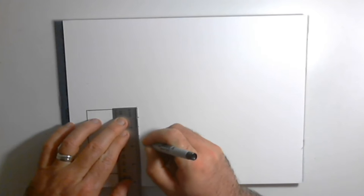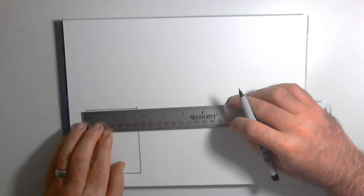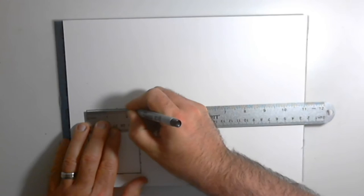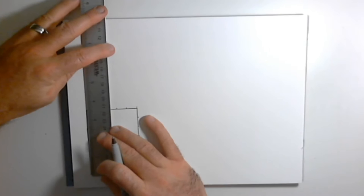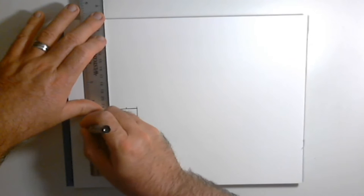One inch, one and a half, two, two and a half, three, and then three and a half is the corner. And I'm going to do the same on the top at the half inch, one inch, one and a half, and two inch mark. I'm going to do the same thing on the left side at the half inch, one inch, one and a half, two inch, two and a half, and three inch mark.